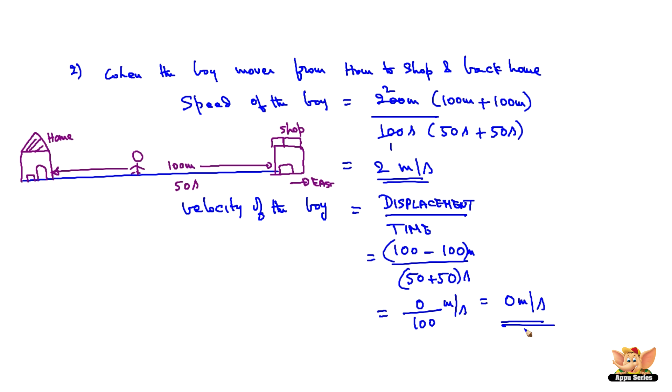So the velocity can be zero sometimes when the initial position is the same as final position. When initial position of moving object is equal to final position of moving object, the velocity can be zero.